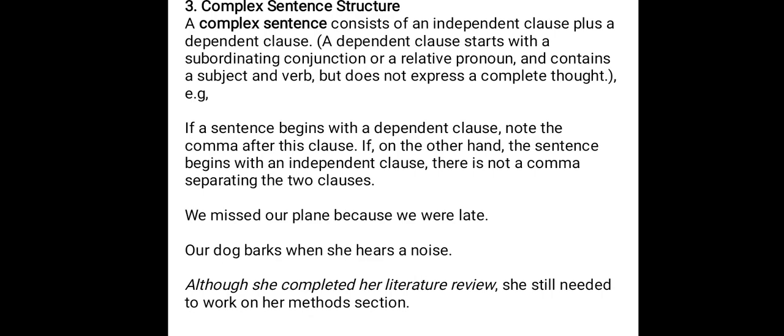A complex sentence structure is the third type. A complex sentence consists of an independent clause plus a dependent clause. A dependent clause starts with a subordinating conjunction or a relative pronoun and contains a subject and a verb, but does not express a complete thought. The dependent clause needs the independent clause to express a complete thought and cannot stand alone. If we read only a dependent clause, the reader will not understand what is written.